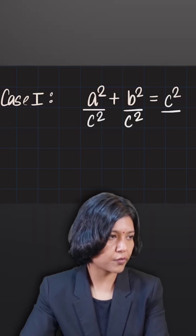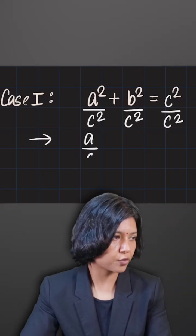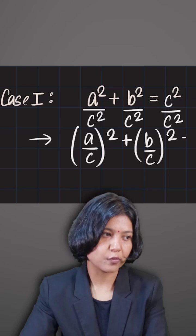Now note that if you have a squared by c squared, you can eventually write that as a by c the whole squared, b by c the whole squared, and c squared upon c squared is simply one.